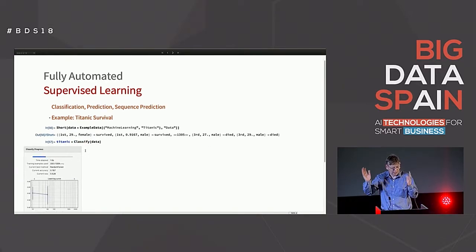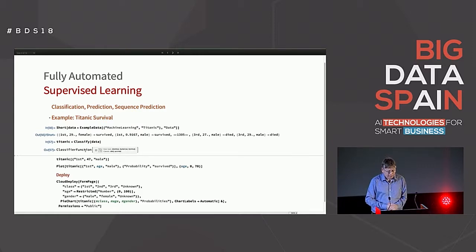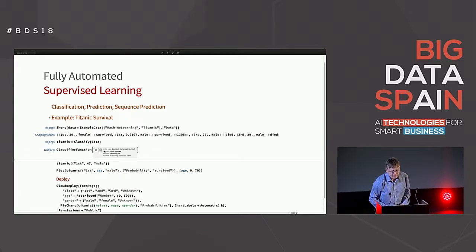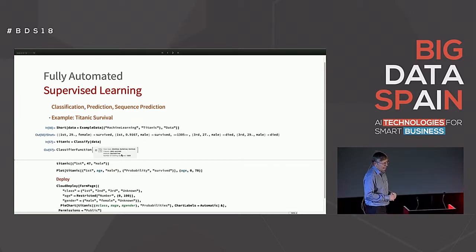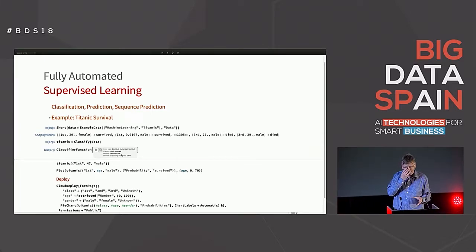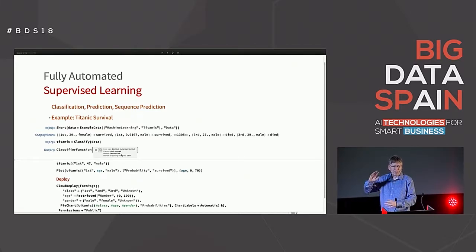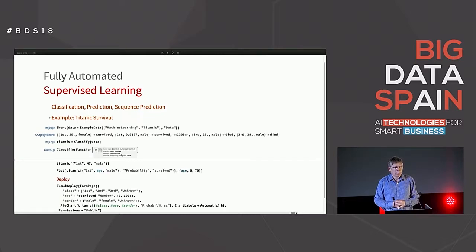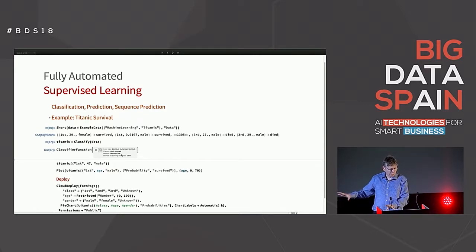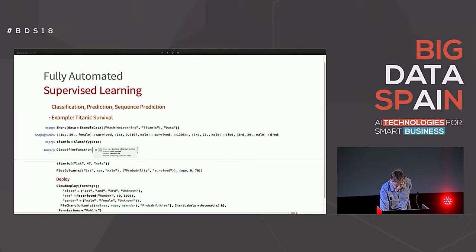What's interesting about this example is buried in the small print — it says 'method: decision tree.' One of the models for machine learning is decision trees, and it's decided on its own that's the best model to use for this data. I might be an expert and say I want to use k-nearest neighbor or neural networks — but if we're trying to make non-experts productive, the first step should always be to automate all of those choices: which method, what hyperparameters, what encoding pipeline. It's figured out on its own that the data is nominal, numerical, nominal.